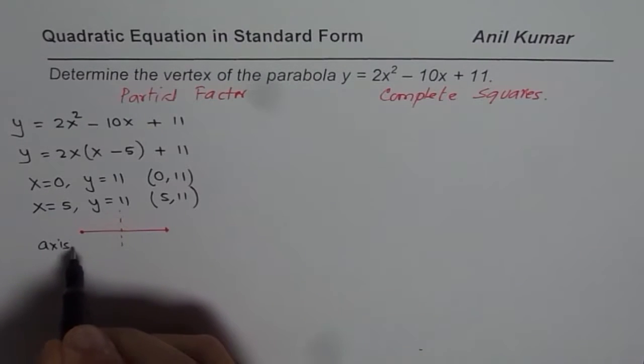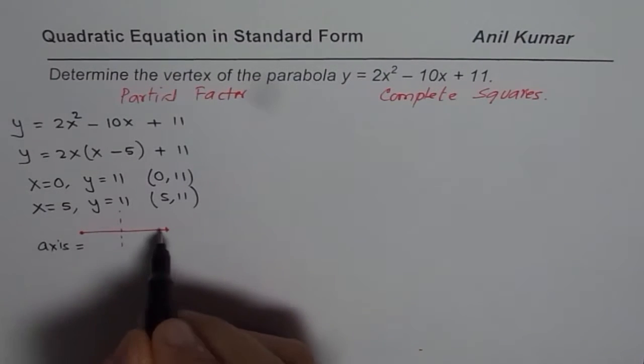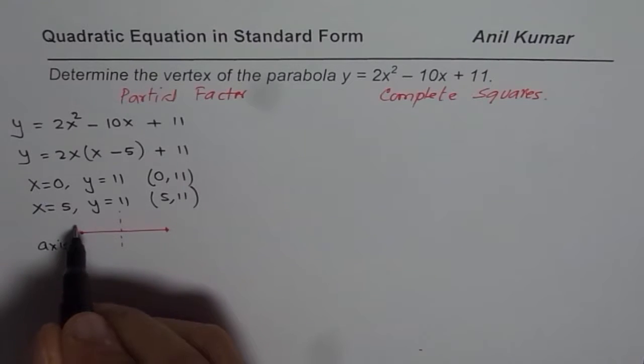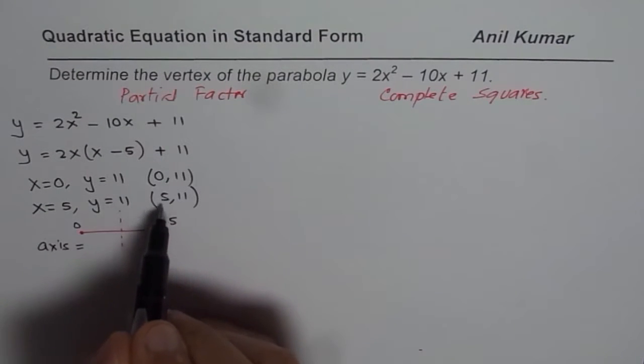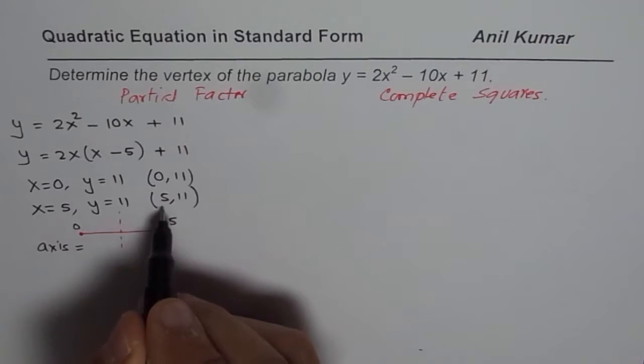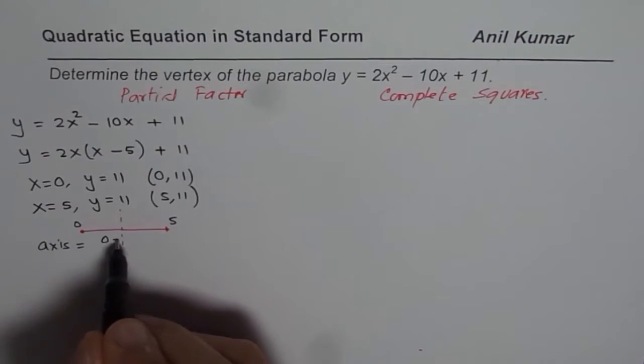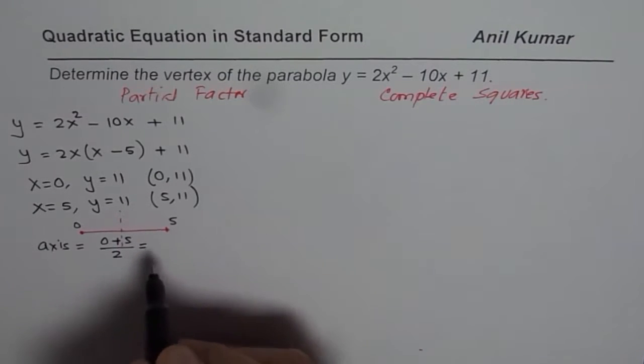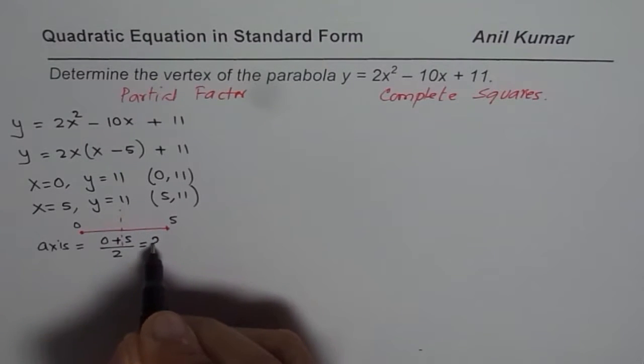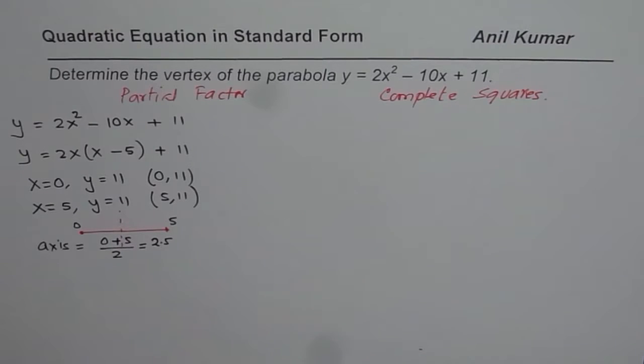So we say axis equals the center of the two x values which are 0 and 5. So axis is the average value of these two. We can add 0 and 5 divided by 2, so we get a value as 2.5, or you could write 5 over 2. So with that we get the axis.